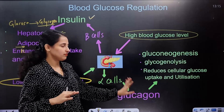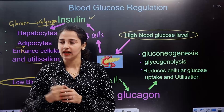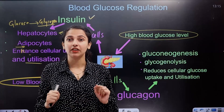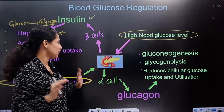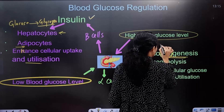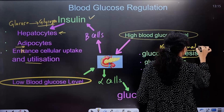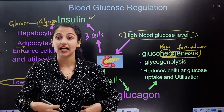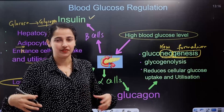The alpha cells secrete a hormone called glucagon. Glucagon promotes gluconeogenesis — the formation of new glucose molecules. The word 'neo' means new and 'genesis' means formation. Gluconeogenesis involves synthesizing new glucose molecules from stored fat in adipose tissue, raising blood glucose back to normal.